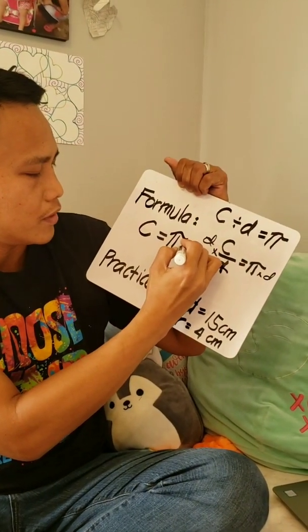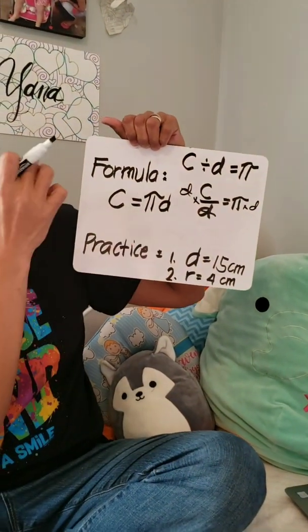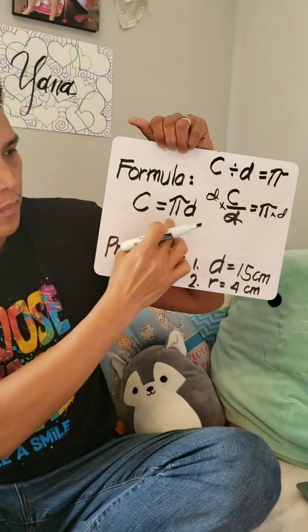Pi times the diameter, pi d. If you put the pi and the diameter together, that means you're going to multiply that.